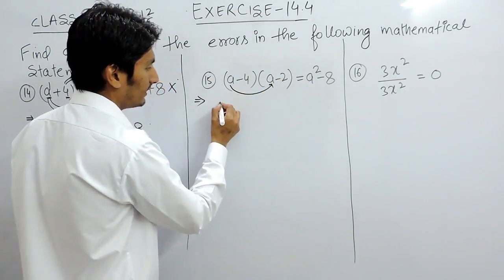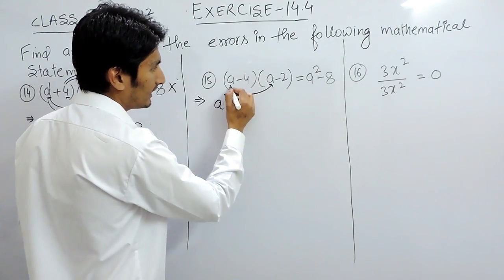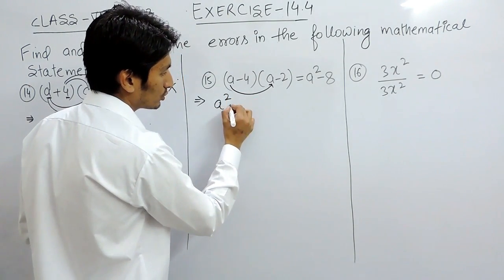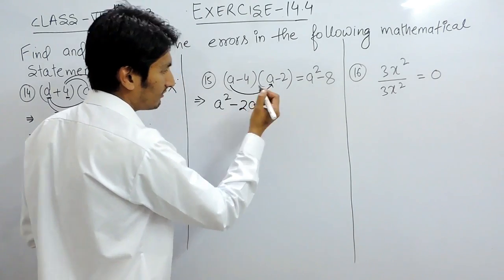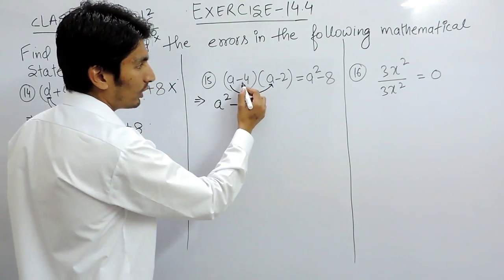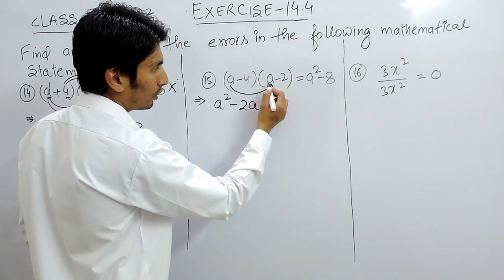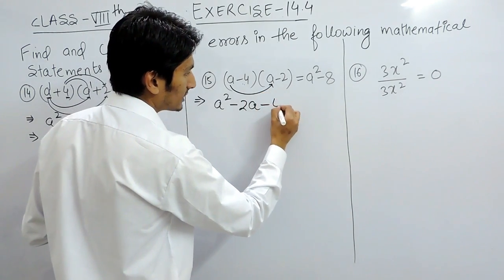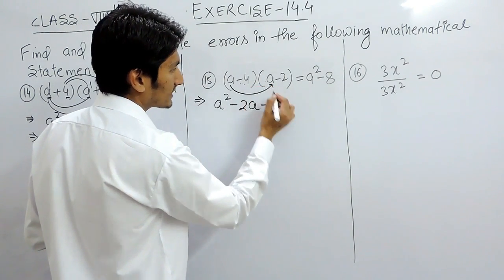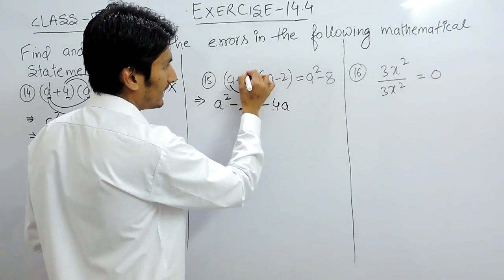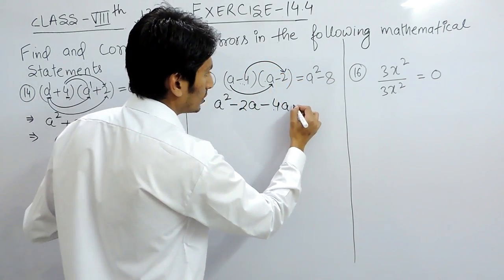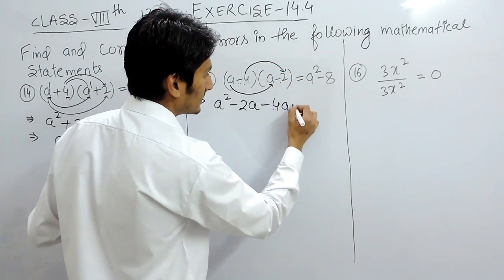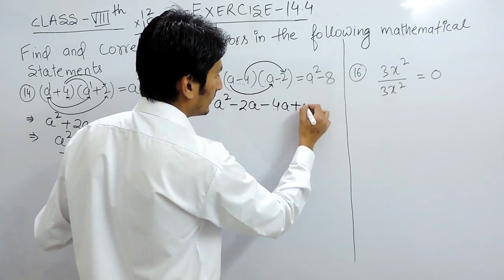Multiply a with a, so this should give a square. Now a with minus 2, so 2a with negative sign. Now negative 4 multiplied by a should give minus 4a, because minus plus is minus. Now negative 4 is multiplied by negative 2, so it should give minus minus is plus, and the result is 8.